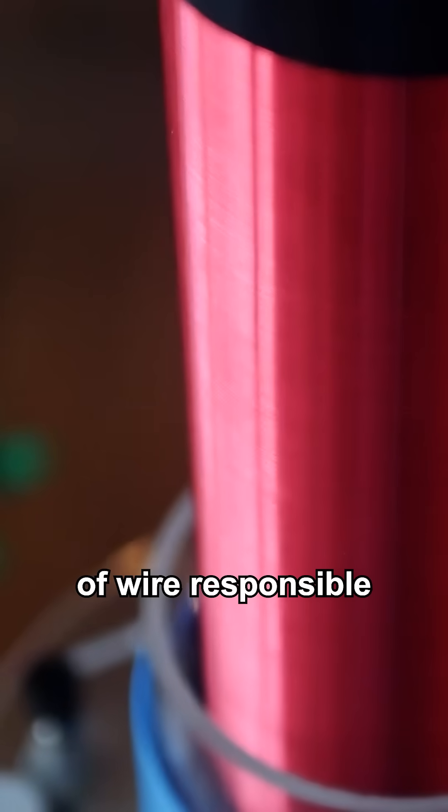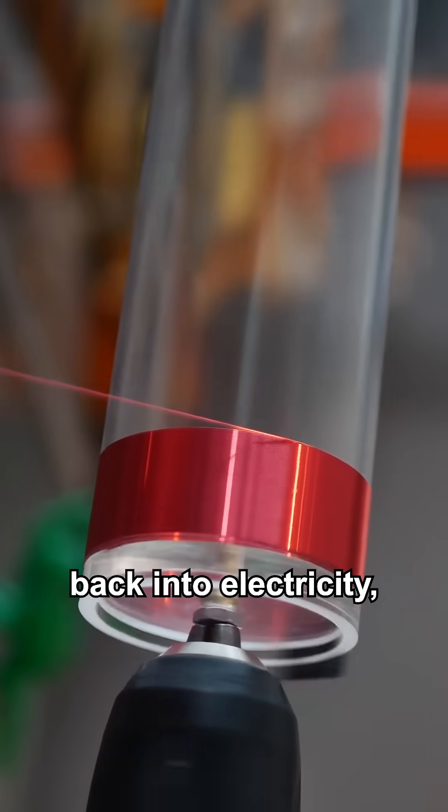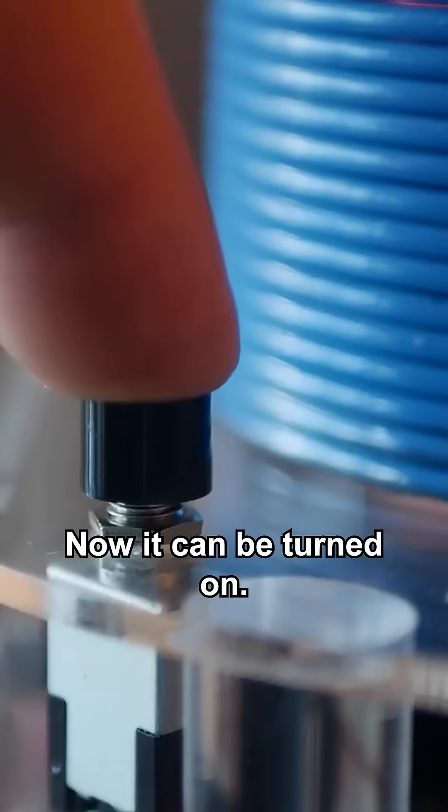The secondary coil. This is a second coil of wire responsible for converting the electromagnetic pulses from the primary coil back into electricity, but at a much higher voltage. And with that, the coil's now done. Now it can be turned on.